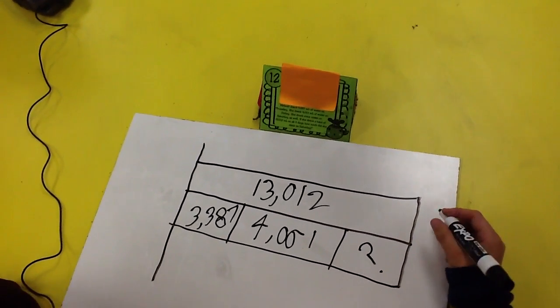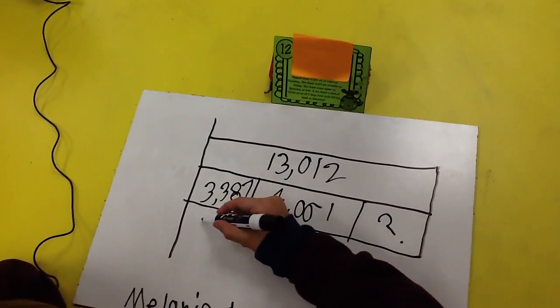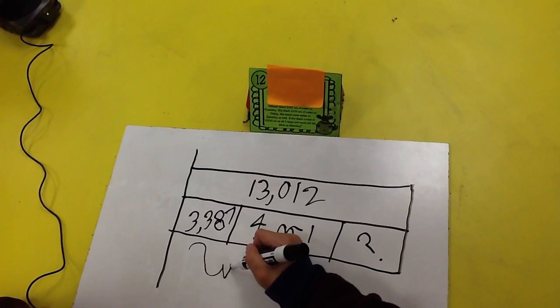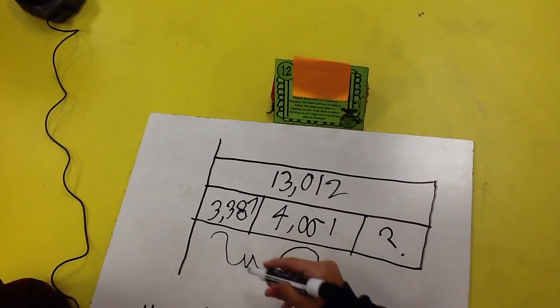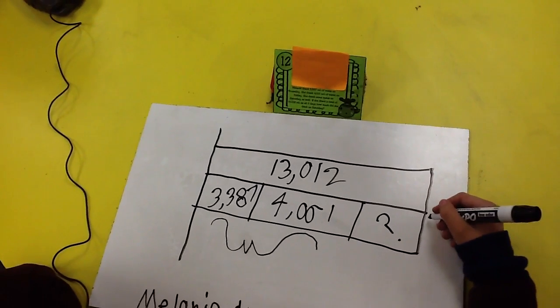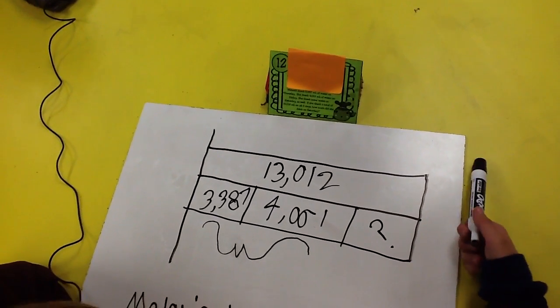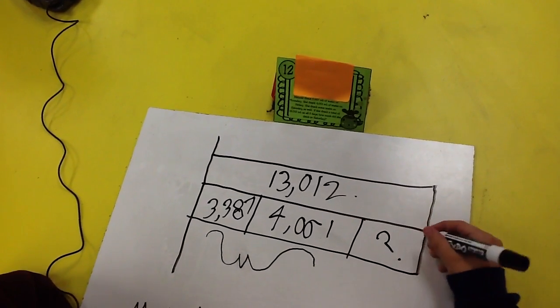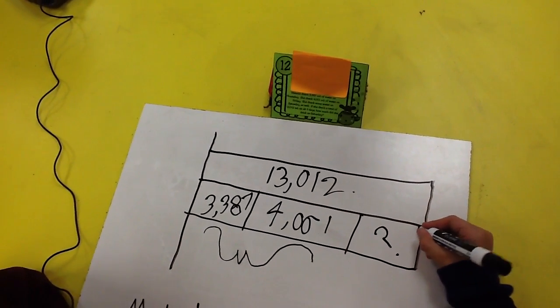So what we need to do is get the sum of these two numbers, and then get the difference from the big number. And that should give us this one.